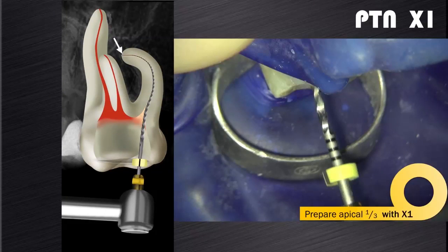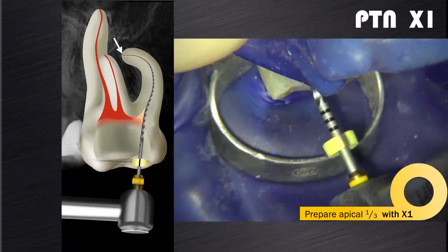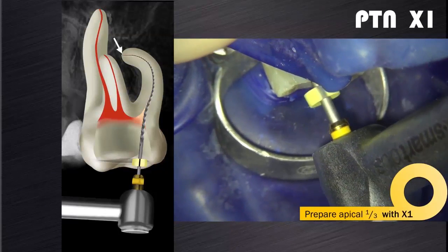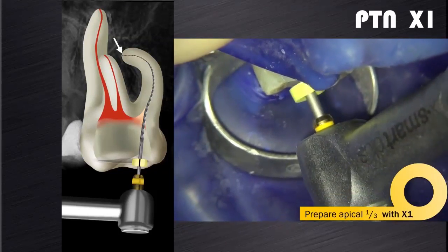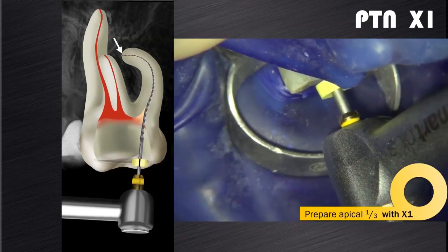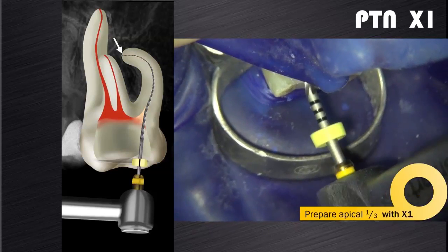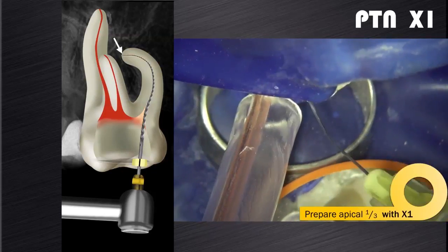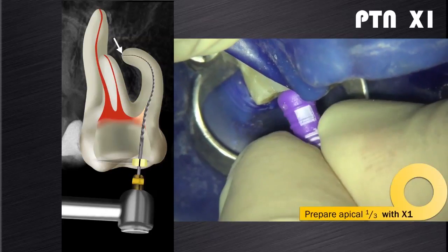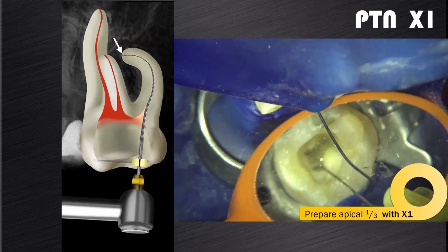If you now go back to the ProTaper Next X1 after you have cleaned its cutting flutes, you will find that the X1 will progress very easily to full working length without any strain on the instrument while it prepares the apical third of the canal. I find this protocol a much safer way to introduce ProTaper Next instruments when I am faced with complex anatomy.